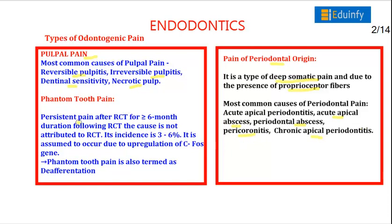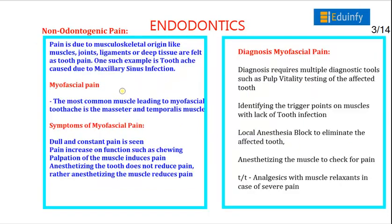Phantom tooth pain refers to persistent pain after root canal treatment for more than 6 months that is not attributed to the RCT itself. It is assumed to occur due to upregulation of C4 genes. This phantom tooth pain is also termed deafferentation pain, and the incidence is about 3–6%.